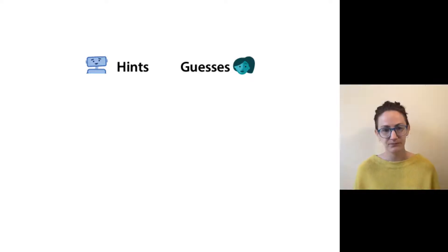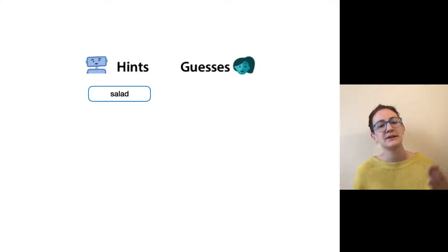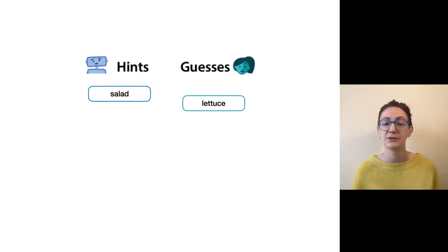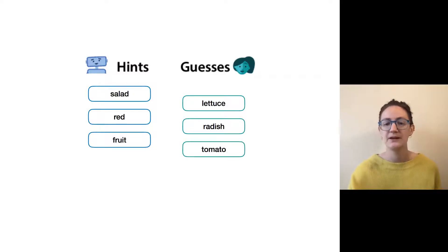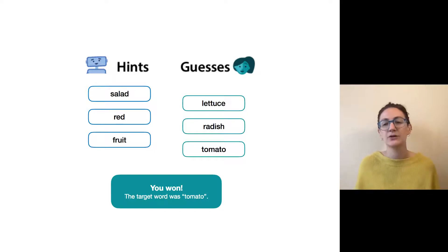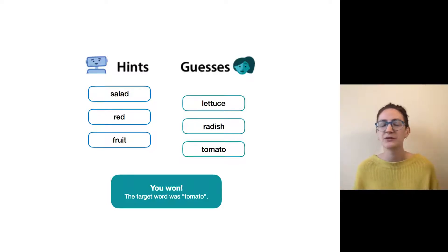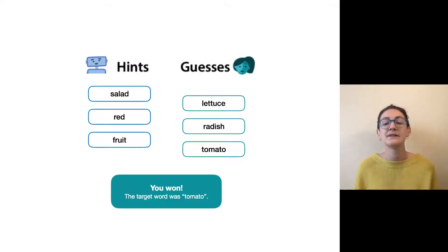It's a two-player word guessing game. One player has a secret word and tries to get the other player to guess it by giving a series of one-word hints. For instance, they might give the hint 'salad' — you think maybe 'lettuce.' If that's wrong, they give another hint: 'red' — maybe 'radish.' Then the hint 'fruit' — and you realize, salad, red, fruit: they must be thinking of 'tomato.' A dialog box pops up: the target word was tomato. Importantly, this is a collaborative game — winning is the same for both players, so there are no deception issues. It's really a game about developing mental models and understanding what your partner is thinking.